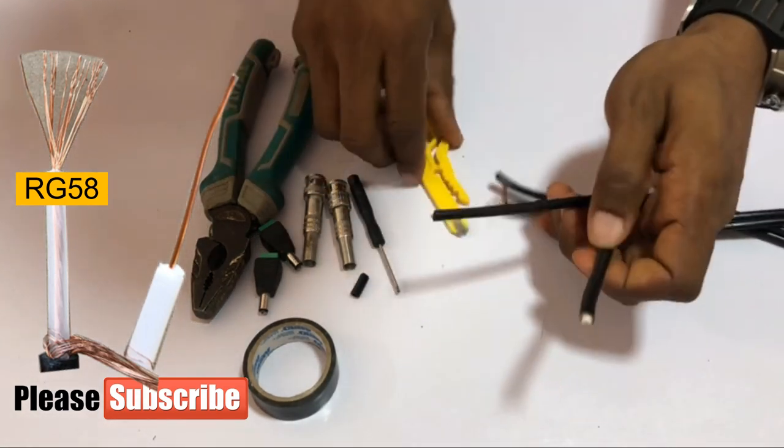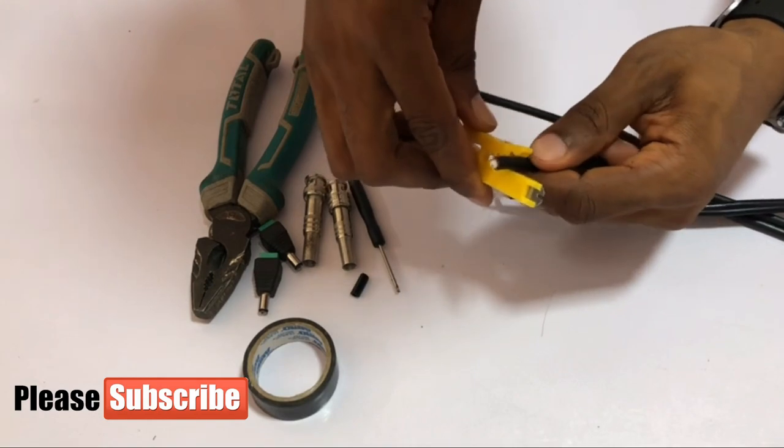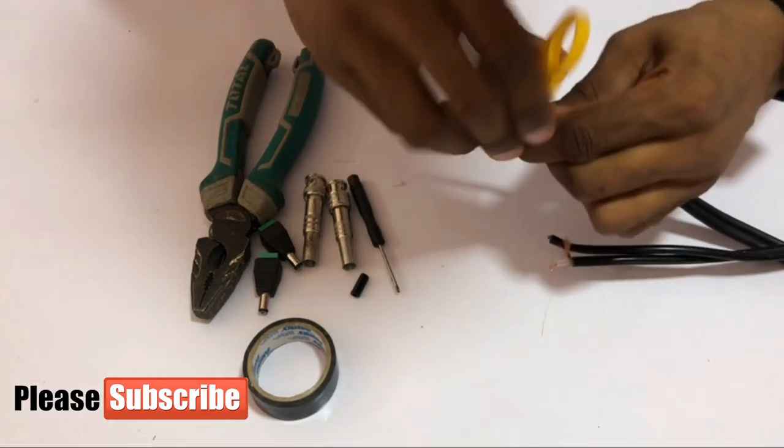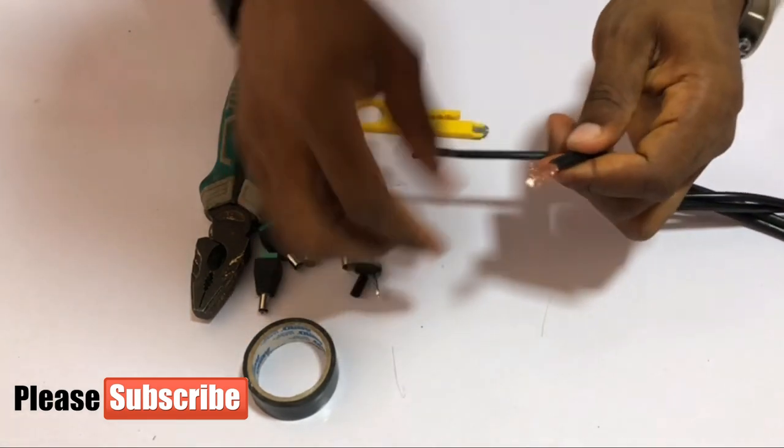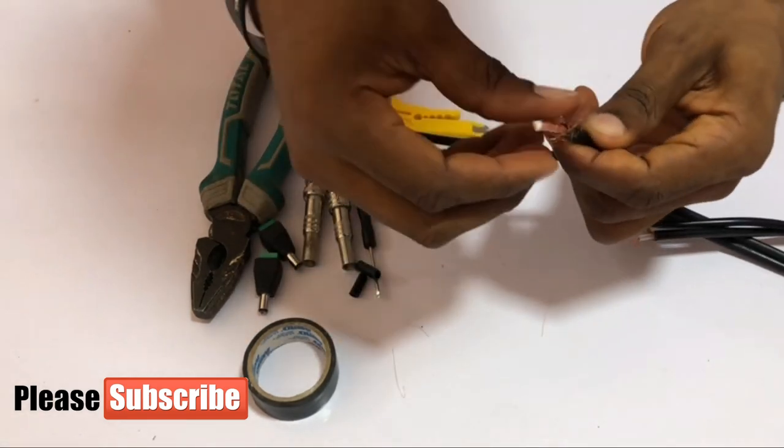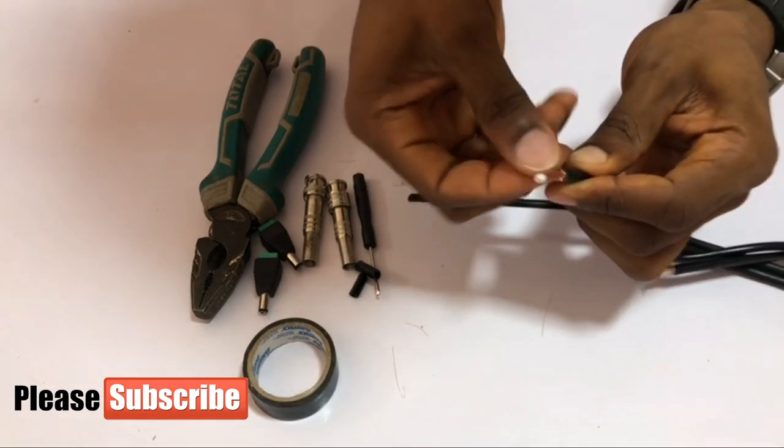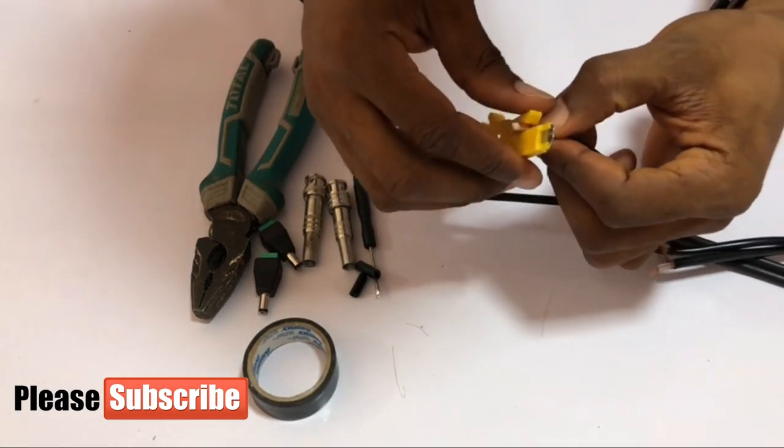Now let me show you the RG59. I'm going to strip out this outer layer. Okay, I also have my negative here. I'll strip out to the inner layer.